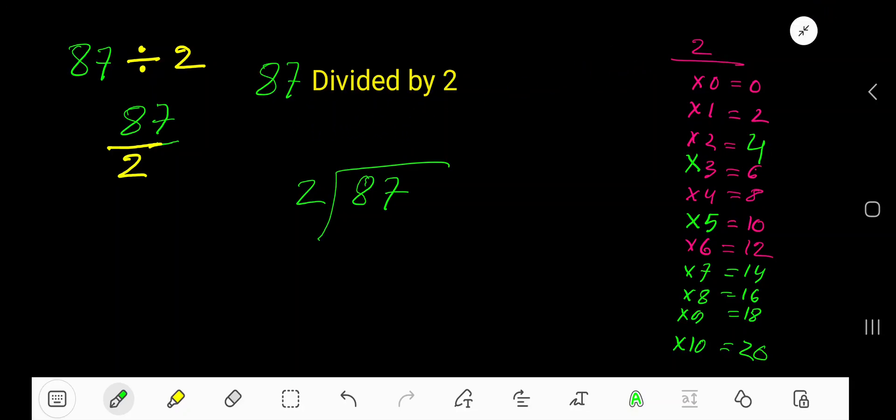87 divided by 2. Ok, so 2 is the divisor. We need the multiplication table of 2. 2 times 0 is 0, 2 times 1 is 2, 2 times 2 is 4, 2 times 3 is 6, and 2 times 4 is 8. And this will continue. Actually, to find out the multiplication table of 2, just add 2 to the previous step. 0 plus 2 is 2, 2 plus 2 is 4, 4 plus 2 is 6, 6 plus 2 is 8, and this will continue.